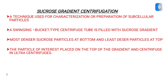Sucrose gradient centrifugation is a technique used for characterization or preparation of subcellular particles. A swinging bucket type centrifuge tube is filled with a sucrose gradient — the most dense sucrose particles at the bottom and the least dense particles of the sucrose lie at the top. The particle of interest, or sample, is placed on the top of the gradient and centrifuged in ultracentrifuges.